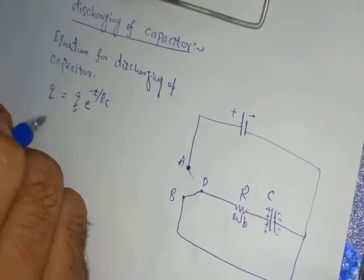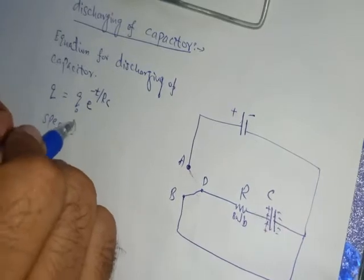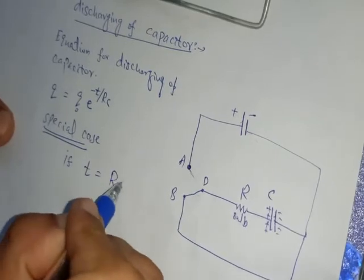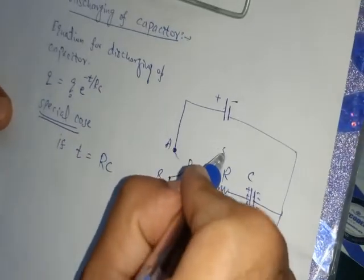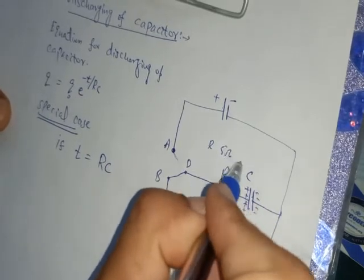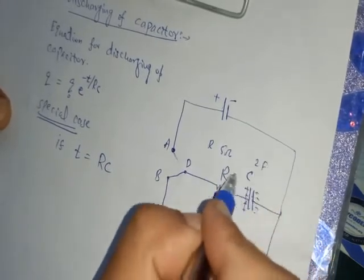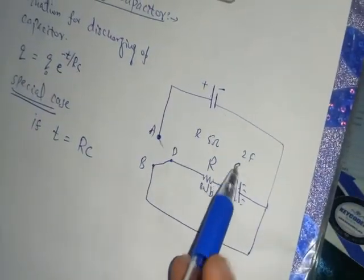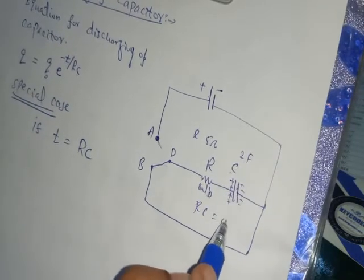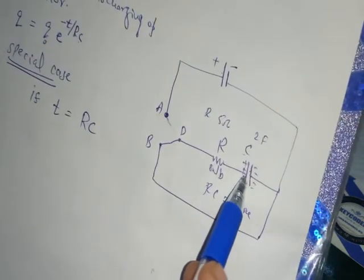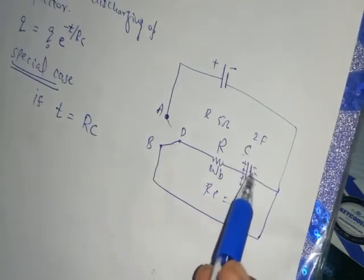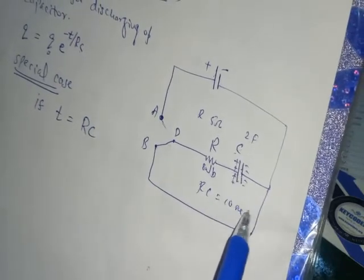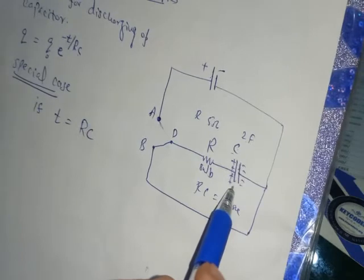Now if we have a special case, that is if the value of T gets matched with the value of RC. RC means, let's say we have the resistance of 5 ohm and capacitance of 2 farad. When we multiply R and C, 5 times 2 is 10, so the value of RC comes out to be 10 seconds. And the time is also going on, 1 second, 2 seconds, 3 seconds. At last, the time taken by discharging will reach a value of 10 seconds. So when the time value matches with the time constant value...